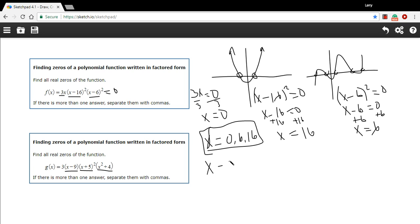So x minus 9 equals zero. And x plus 5 quantity squared equals zero. And x squared plus 4 equals zero.